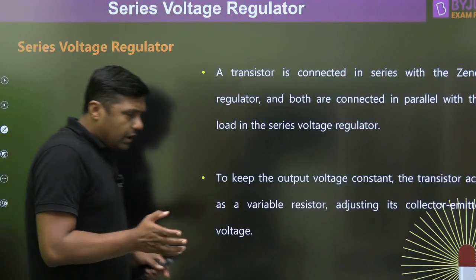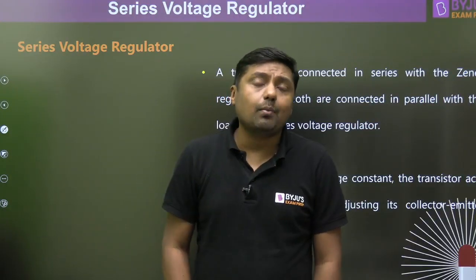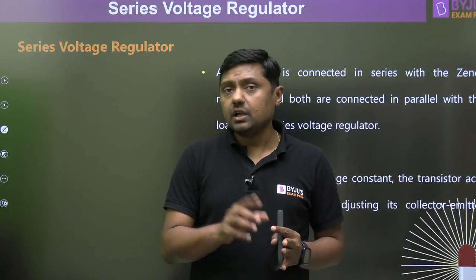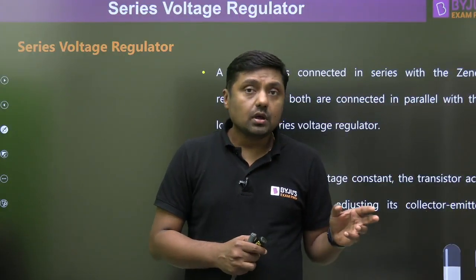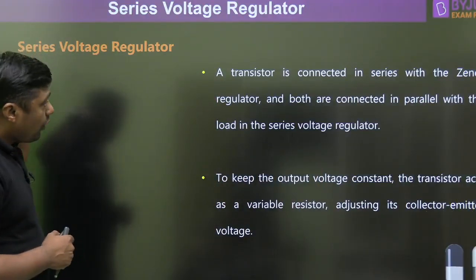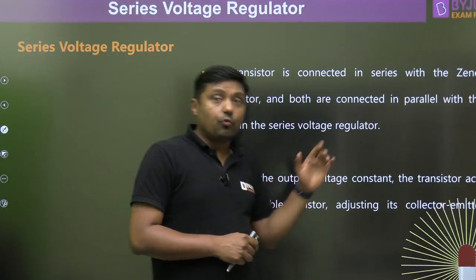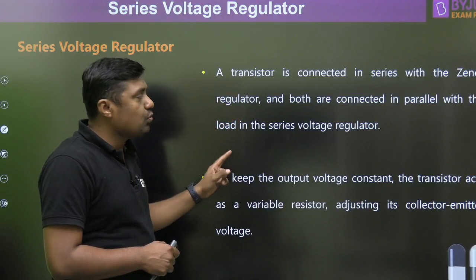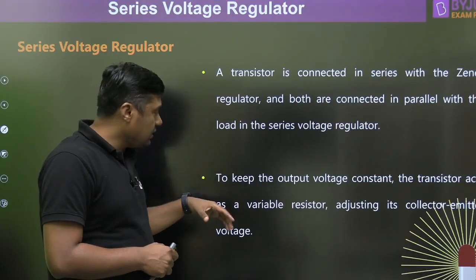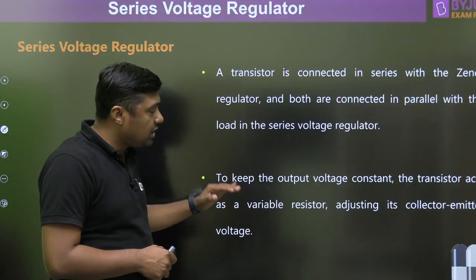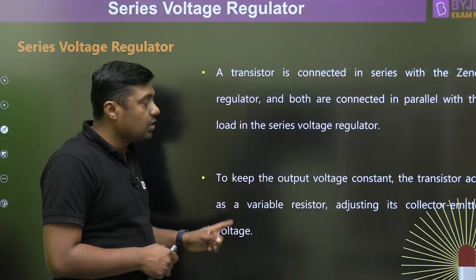Now, what is a series voltage regulator? In the previous lecture I gave you the idea about the voltage regulator using a Zener diode and its limitations — please watch that session. Now I am going to discuss the voltage regulator using a transistor. When a transistor is connected in series with the Zener diode and both are connected in parallel with the load, that is the series voltage regulator. To keep the output voltage constant, the transistor acts as a variable resistor adjusting its collector-emitter voltage.